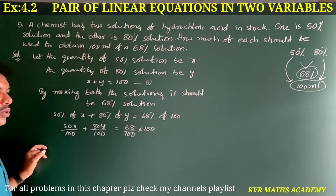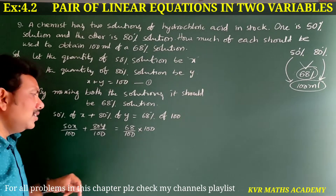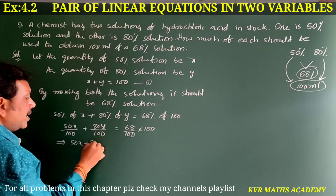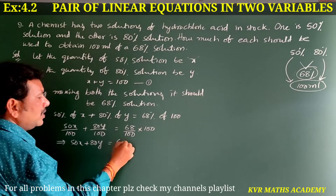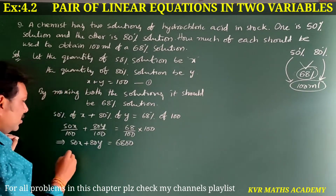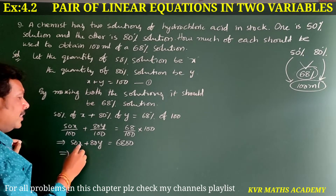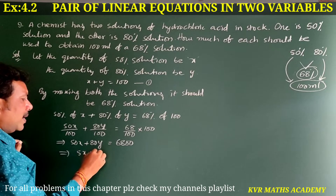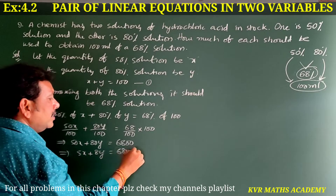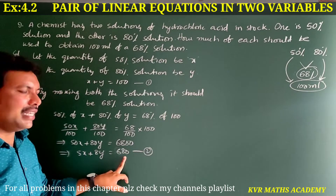Further dividing by 10, we get 5X plus 8Y is equal to 680. This is equation number 2. We now have equation 1: X plus Y equals 100, and equation 2: 5X plus 8Y equals 680.